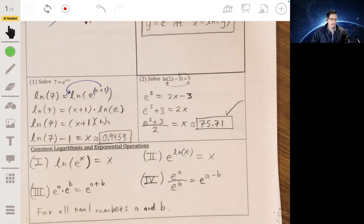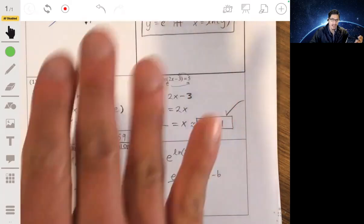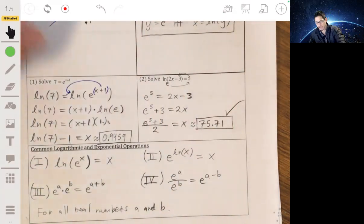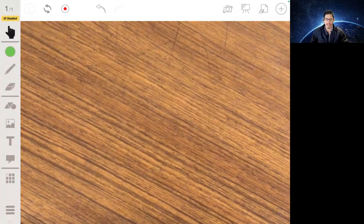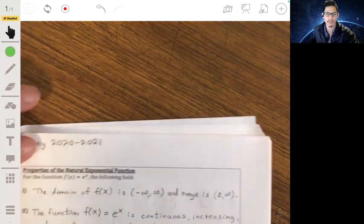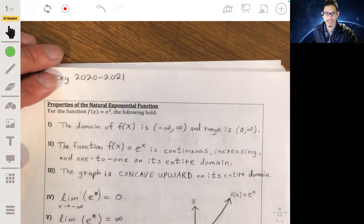All right, now to sum up some of the key properties of the graph of the exponential function with the base e, so the graph of the natural exponential function, make sure you understand these characteristics.